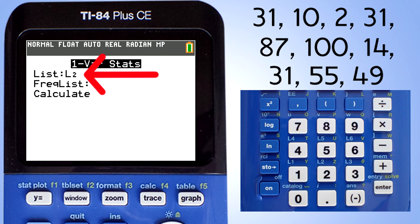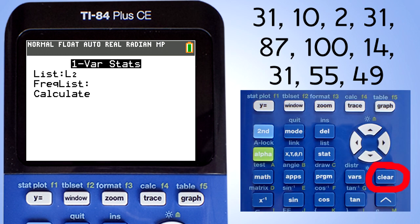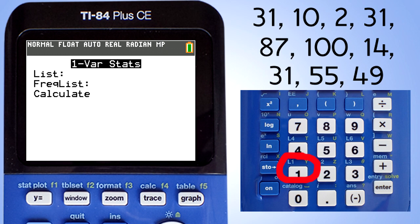Notice here the list states L2. However, our list of numbers are in the L1, so we need to change this to L1. Press the clear button here to clear out the L2. Now press the second button here, then the L1 button, which is this one key. The list now says L1. Go down to calculate. Press enter button.